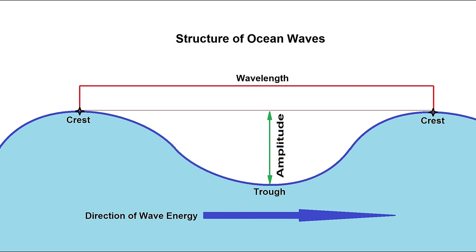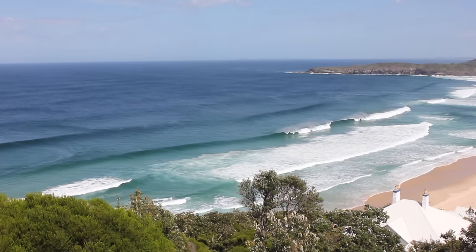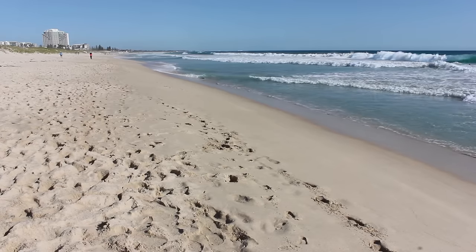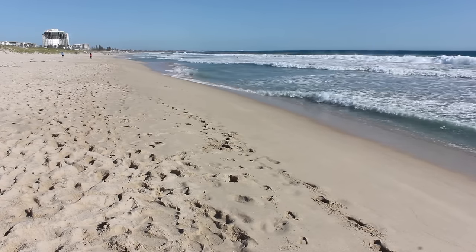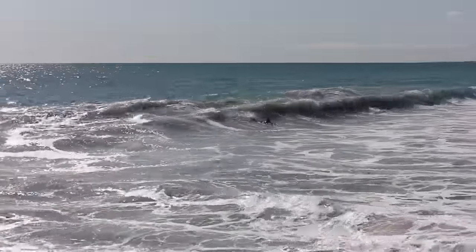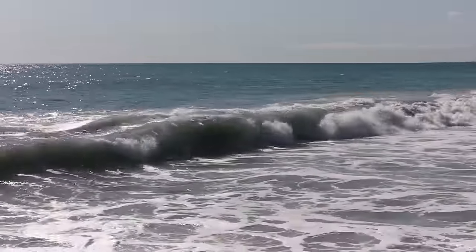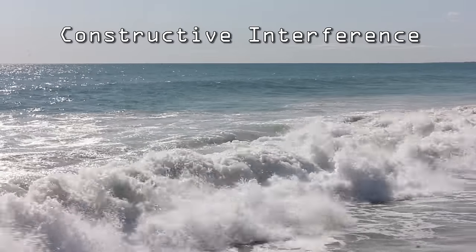Waves have a crest and a trough. The distance between crests is known as the wavelength. Waves travel in groups called a wave train. Waves are not all moving at the same speed. When one wave catches up to another you can end up with an even higher wave. This is called constructive interference.